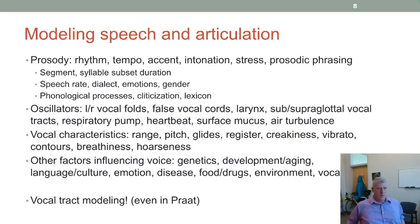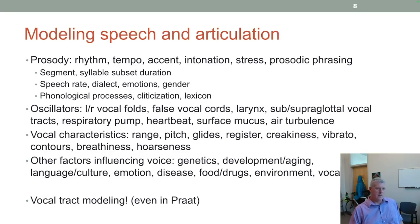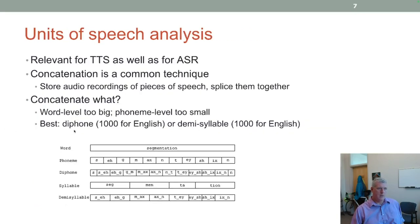How we model speech and articulation: prosody is important — rhythm, tempo, accent, intonation, stress, and phrasing. The syllable is important in creating human-like TTS systems. Speech rate should vary — humans vary their speech rate, so getting a system to do that is important; the older synthesizers had very monotone speech rate. Dialect, emotions, and gender play an important part in modeling speech, as do phonological processes and cliticization — clitics being words that get attached to other words and pronounced as if part of the same word — and having a lexicon.